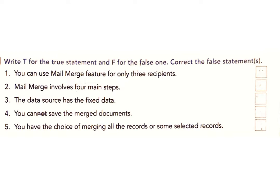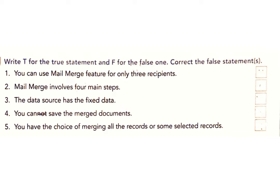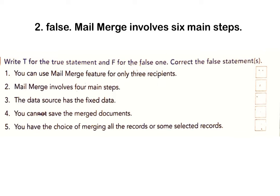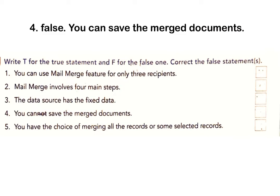B: Write T for the true statement and F for the false one. Correct the false statements. A: You can use mail merge feature for only three recipients. Answer: False. You can use mail merge for multiple recipients. B: Mail merge involves four main steps. Answer: False. Mail merge involves six main steps.